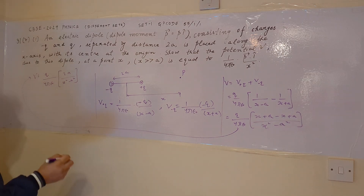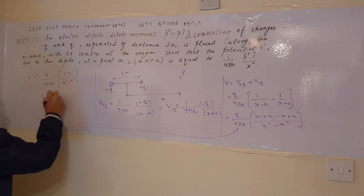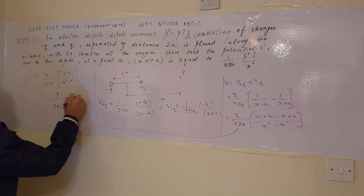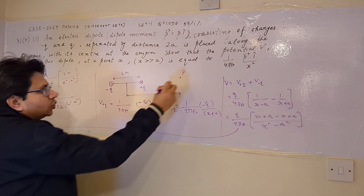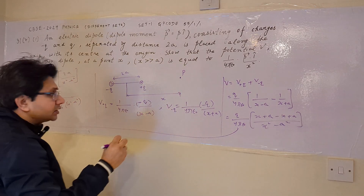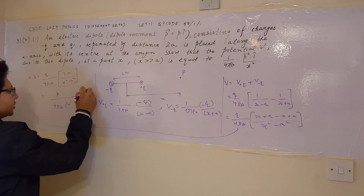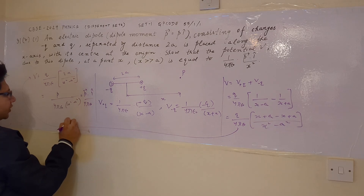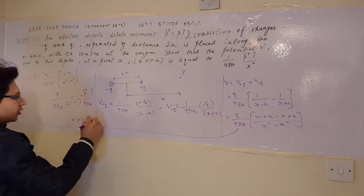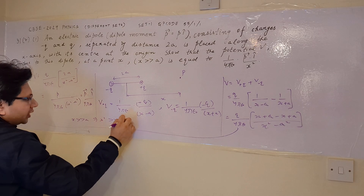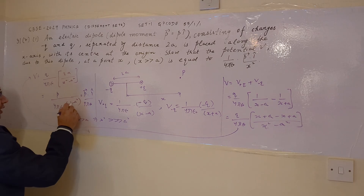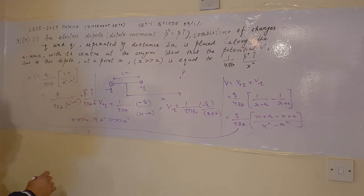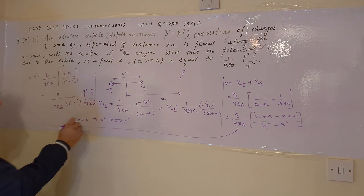Now, q times 2a is nothing but the dipole moment p, so we substitute to get p upon 4 pi epsilon naught times (x squared minus a squared). Since the dipole moment is along the x-axis, we write it in vector form as p dot i-cap upon 4 pi epsilon naught. Since x is very much greater than a, x squared is very much greater than a squared, so we can neglect a squared, giving the final answer: p dot i-cap upon 4 pi epsilon naught x squared.